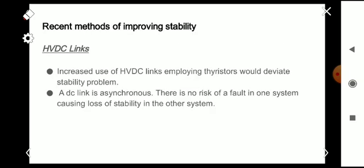Recent methods of improving stability include HVDC links. Increased use of HVDC links employing thyristors would alleviate the stability problem. A DC link is asynchronous, so there is no risk of a fault in one system causing loss of stability in the other system.